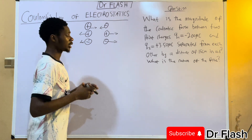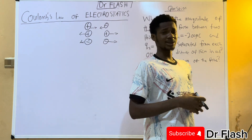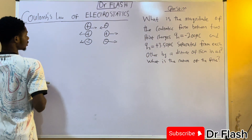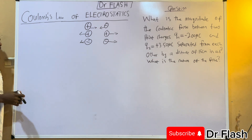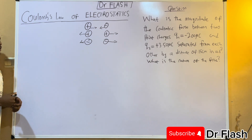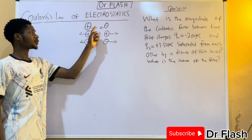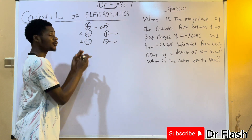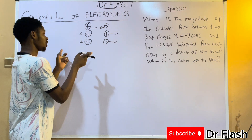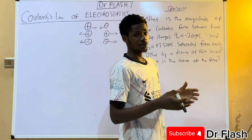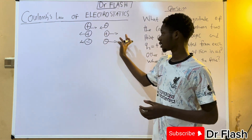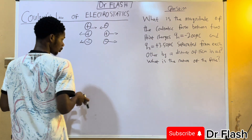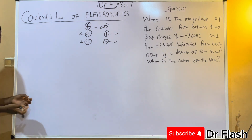Like charges repel and unlike charges attract — that is one of the most basic and important laws in electrostatics. Now, as I said, we're going to be talking about Coulomb's Law of electrostatics. Whenever two charges are attracting or repelling, if they are attracting they are moving towards each other and there is a force of attraction; if they are repelling they are drifting away from each other and there is a force of repulsion. This force is what Coulomb's Law is talking about.